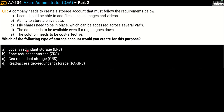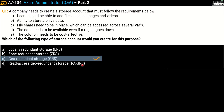Which type of storage account would you create for this purpose? Your options are: A) Locally Redundant Storage (LRS), B) Zone Redundant Storage (ZRS), C) Geo-Redundant Storage (GRS), and D) Read-Access Geo-Redundant Storage (RA-GRS). The correct answer for this question is option C — Geo-Redundant Storage or GRS.